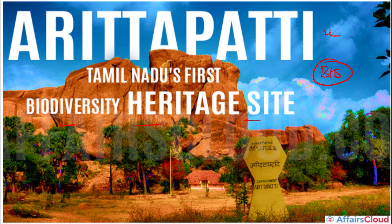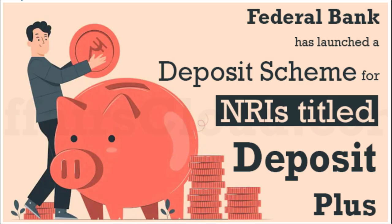Next, the Aritapatti Biodiversity Heritage Site (BHS) — this is the first of its kind in Tamil Nadu. Remember the name and where it is located: Aritapatti Biodiversity Heritage Site is in Tamil Nadu.